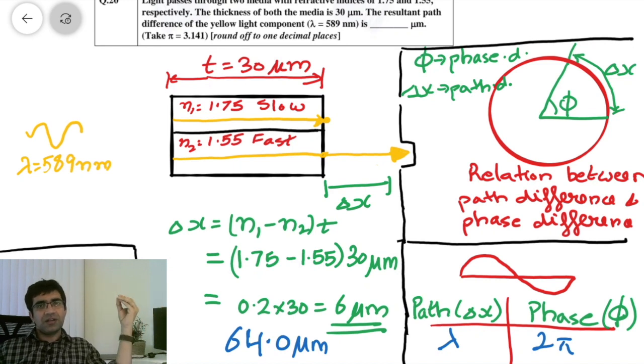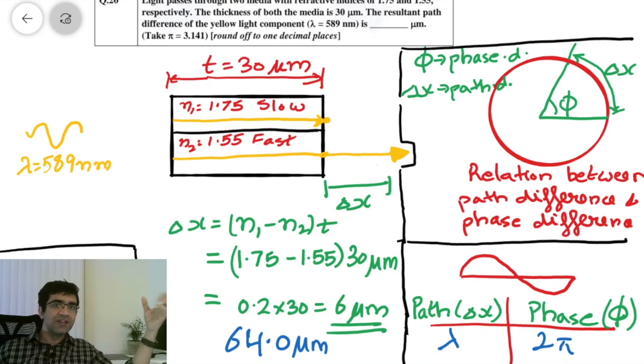I think GATE has committed a mistake in this question. And the mistake is that instead of calculating the path difference, they have calculated the phase difference. I will try to understand what exactly is phase difference.